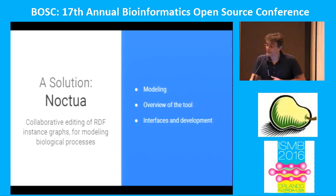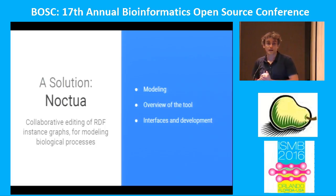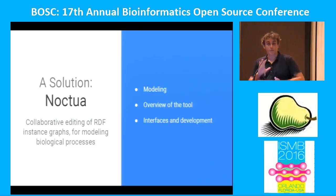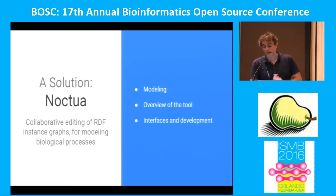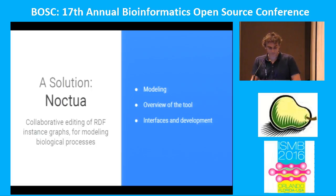Our solution is a new tool called Noctua: Collaborative Editing of RDF Instance Graphs for Modeling Biological Processes. That's a lot, so I'm going to try to unpack this as we go. First, I'd like to cover modeling — what we're doing in the Gene Ontology Consortium now to model data better, moving away from that tabular format into a more graph-oriented format. I'll then give a quick overview of the tool and talk about the interfaces and development.